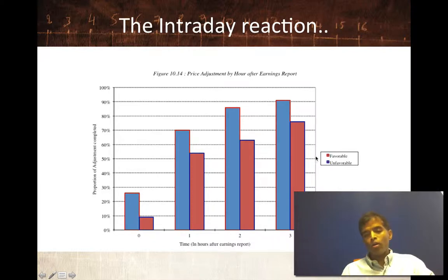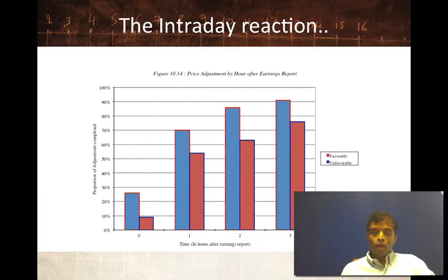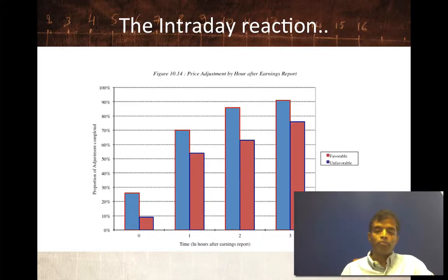Across all four time periods, negative earnings surprises get incorporated into stock prices a little faster than positive surprises. But here's the interesting finding: even if you track three hours after the earnings report, only about 77% of the surprise has been incorporated. So if you're tracking a company and an earnings surprise comes out at 10 o'clock and you don't find out about it till 1 o'clock, you still might have a chance to get in and make the remaining 25%. But clearly you'd much rather get in right after the earnings announcement rather than wait two or three hours.